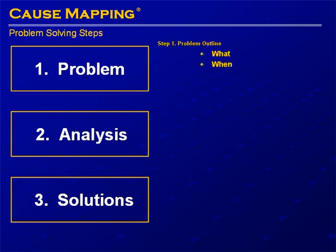You're going to capture information about the timing that goes in the 'when,' and you're going to capture where it happened. To get agreement when defining an issue — because people see the problem differently — you always define an issue by the impact to the organization's overall goals. These goals capture the deviation from the ideal state.